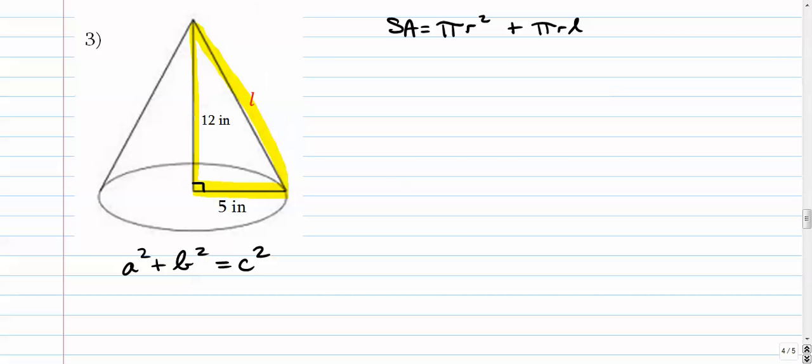So we can use Pythagorean theorem: 5 squared plus 12 squared equals, let's call it l squared. 25 and 144, that's 169, so l is equal to 13 inches.